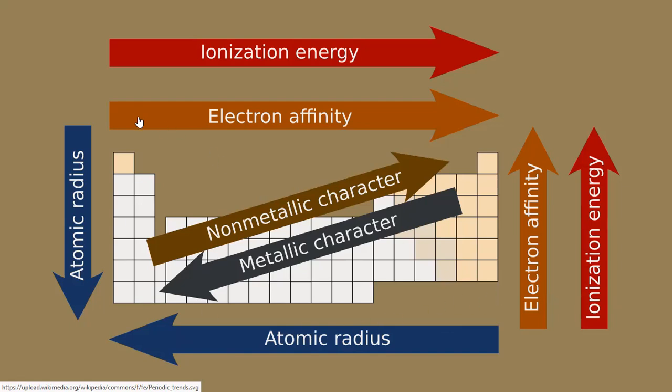Electron affinity is increasing across the period and decreasing down the group. The ionization energy increases across the period and decreases down the group. The non-metallic and metallic character is related to electronegativity, which increases across the period and decreases down the group.